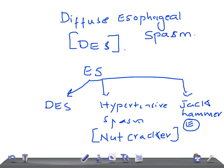Before defining Diffuse Esophageal Spasm, let me brief you on Hypertensive Spasm and Jackhammer Esophagus. In Hypertensive Spasm, the contractions proceed in a coordinated manner, but the amplitude is high. Whereas in Jackhammer Esophagus, the contractions are of very high amplitude, it involves the majority of the esophagus, and the duration of the contraction is prolonged.